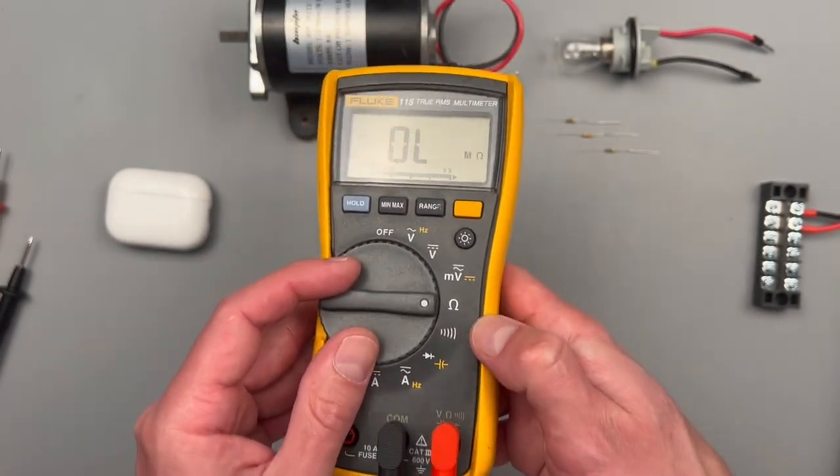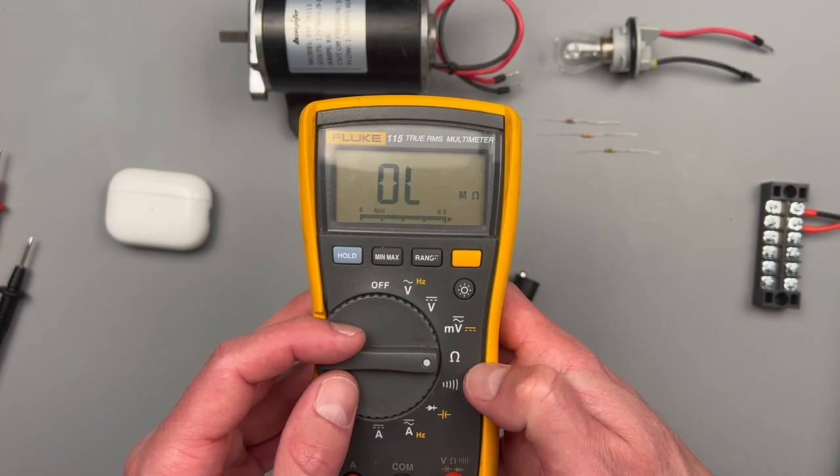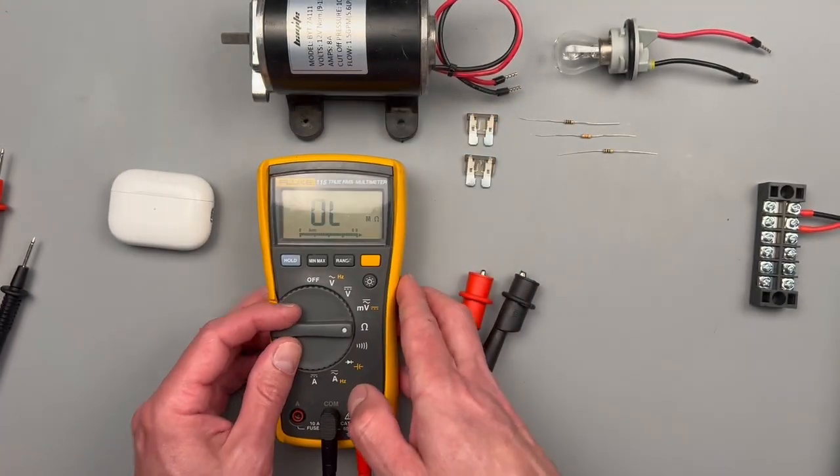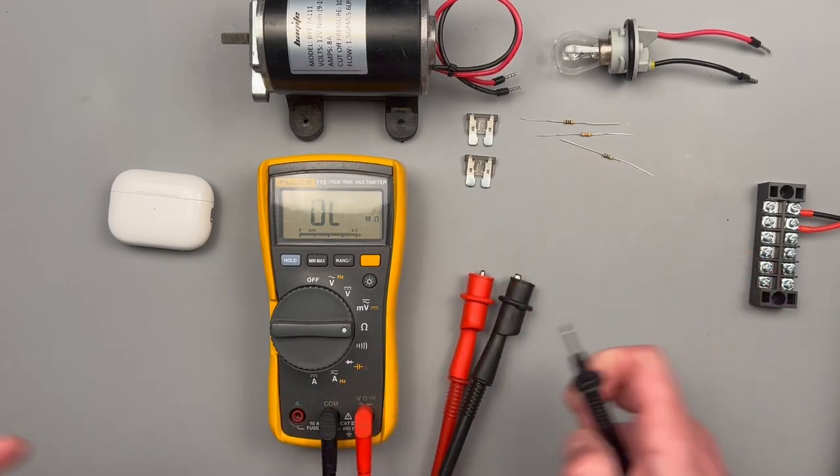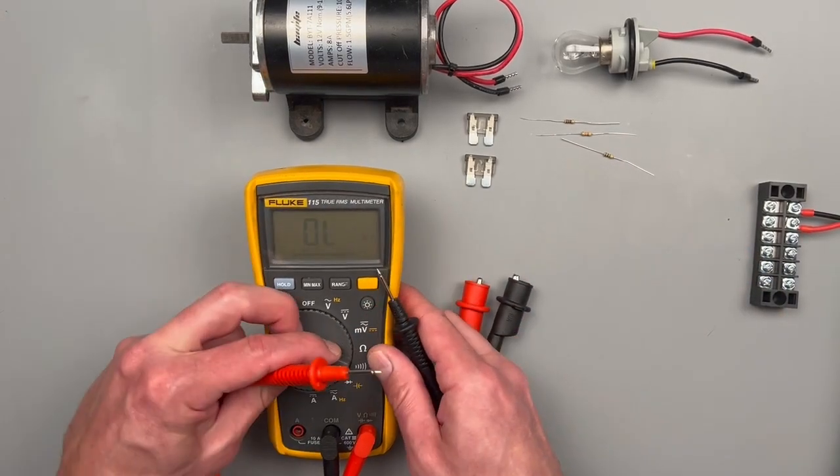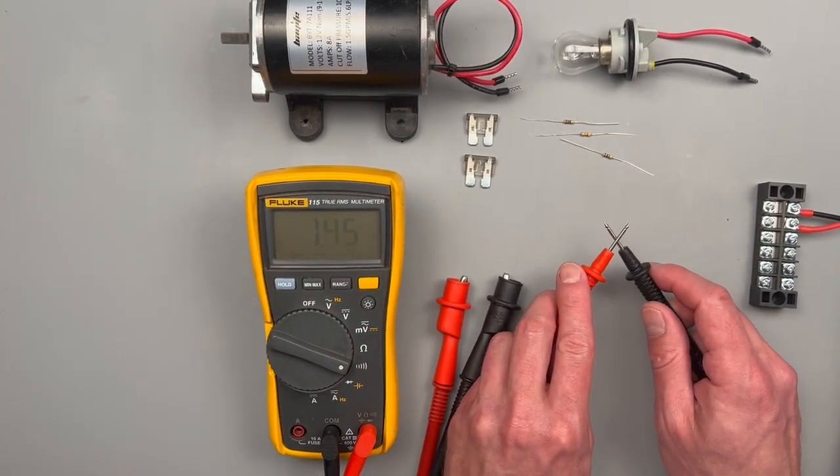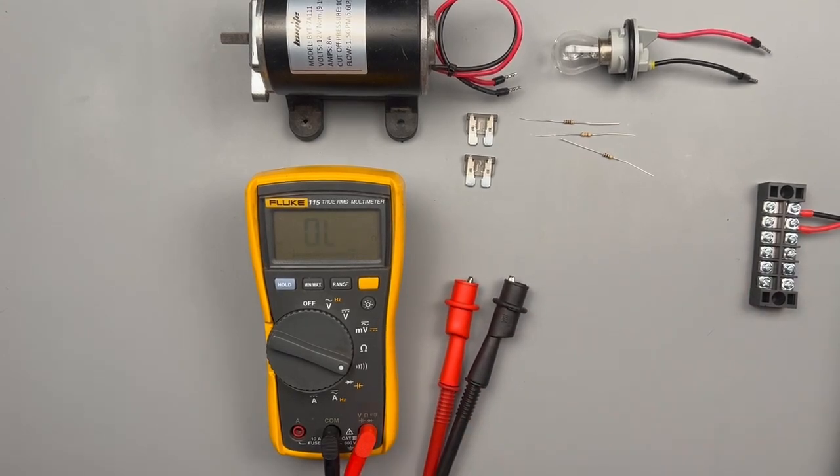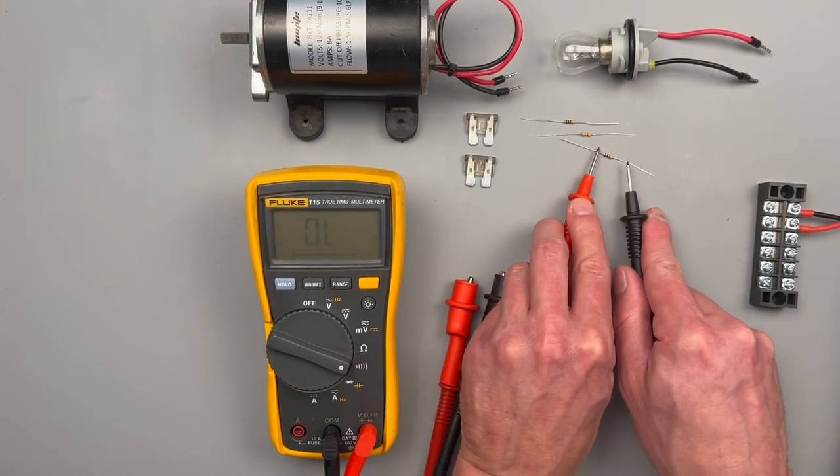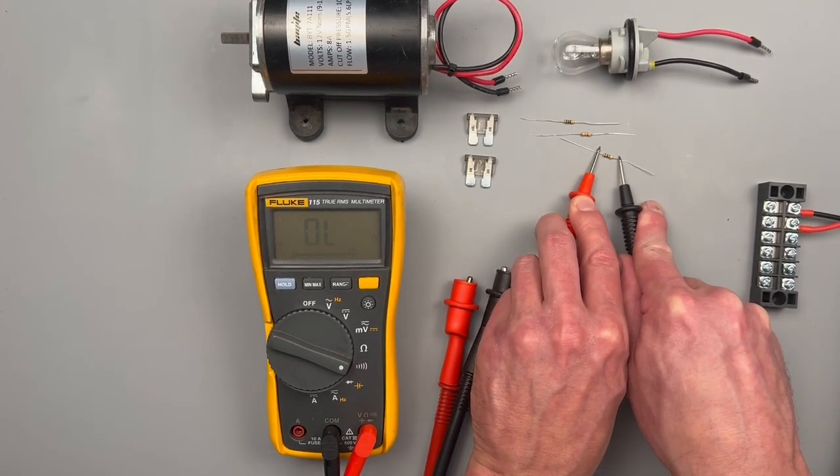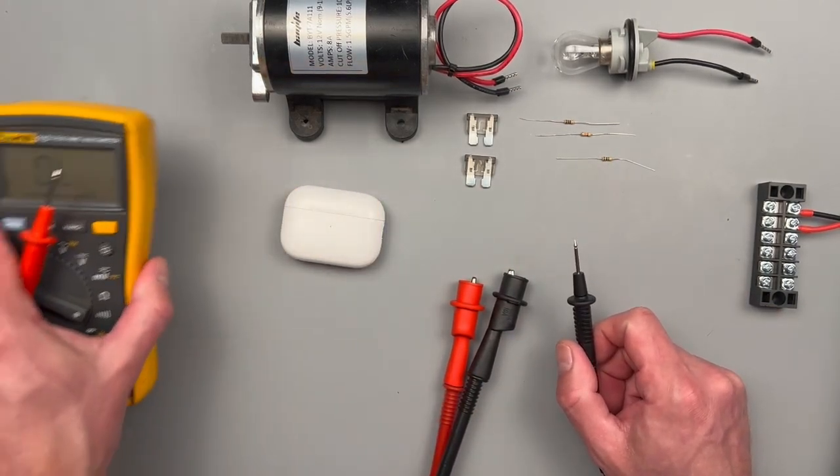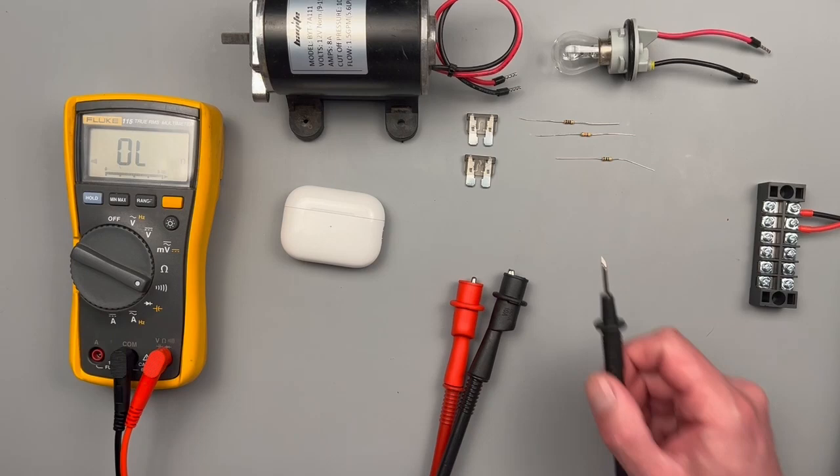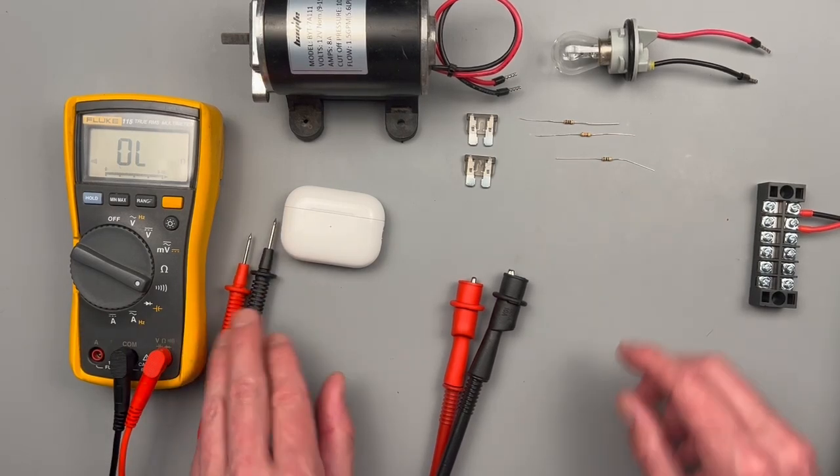What's the difference between resistance and continuity? Well, resistance is going to give you a resistive value. This is saying one mega ohm. Whereas continuity, it's going to produce a tone and it may or may not give you a value depending on the meter, and it's going to have a range. It's saying the resistance is too high for this to say that there's continuity in it. Continuity is meant for lower resistive loads.